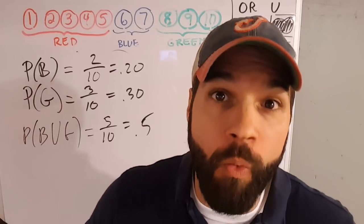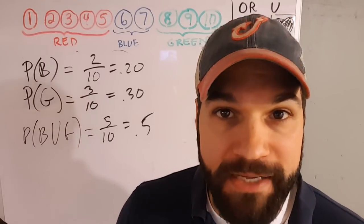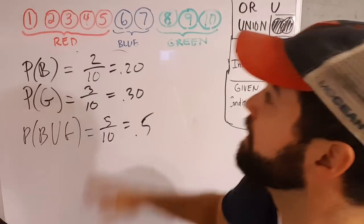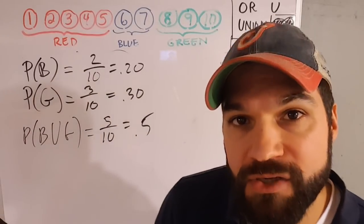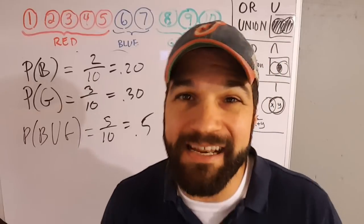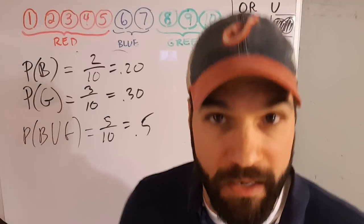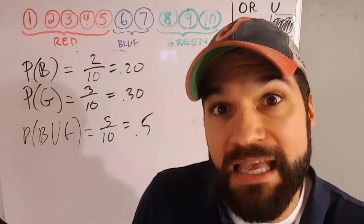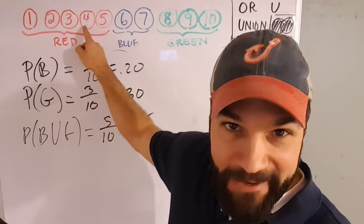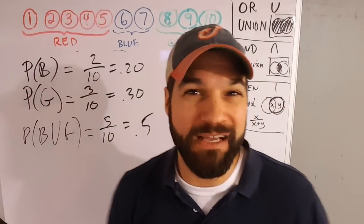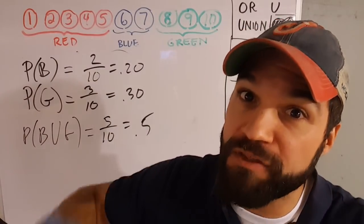This works great when they're disjoint events — when they don't happen at the same time. There's no overlap of blues and greens, so of course you can add them. But what happens when they're not disjoint? When that doesn't happen, we have to use the general addition rule — you just can't add them up. Things that are not disjoint are things like being red and being an even number, because we have some things that are red and even. So being red and being even are not disjoint, but we still want to find this 'or' union.